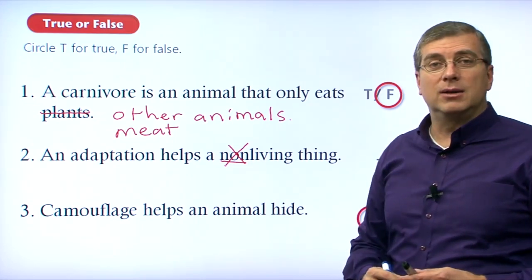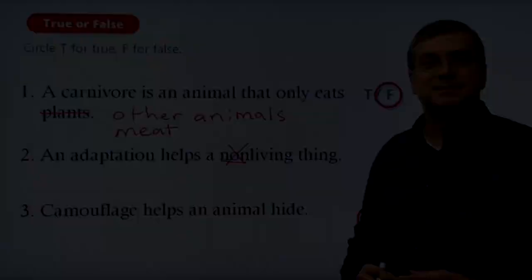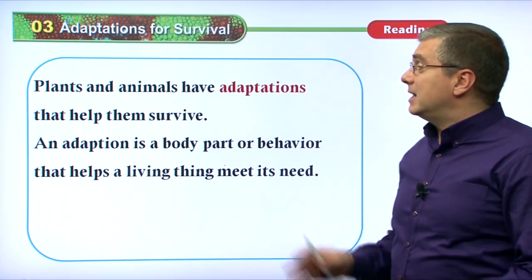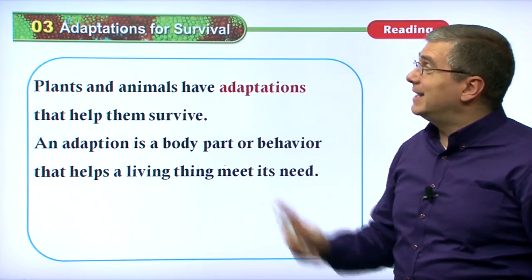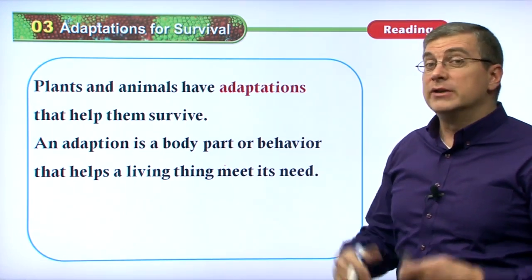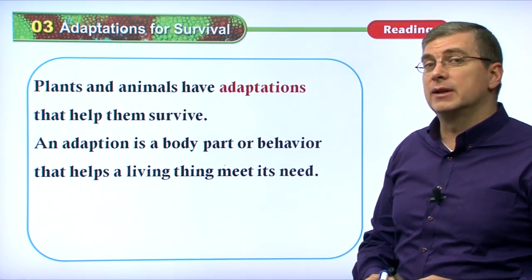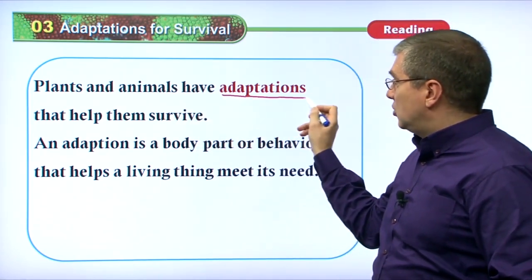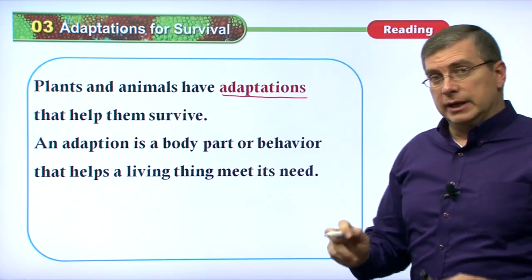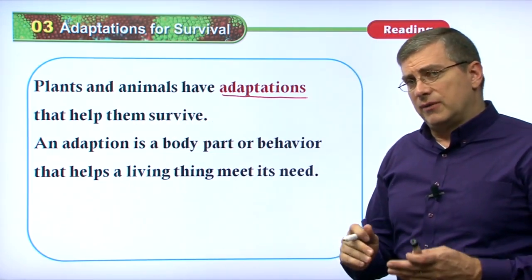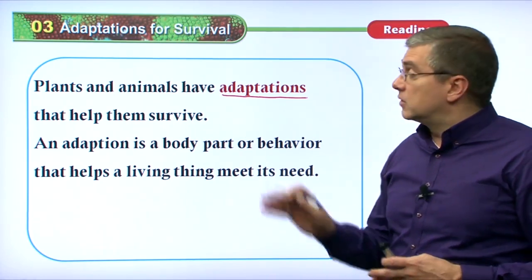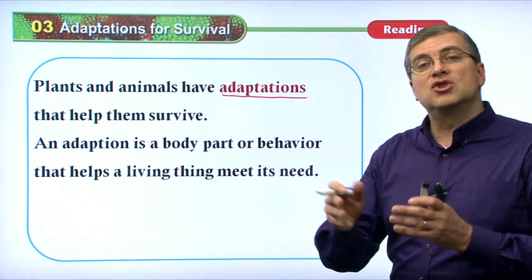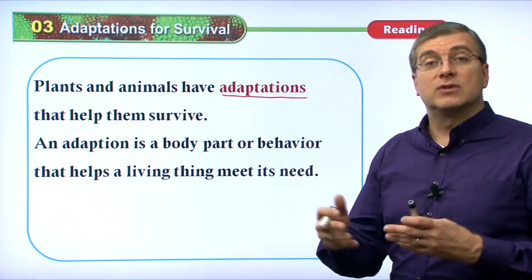Let's take a break and move on to the reading section. Welcome back. In this reading section, our subject is adaptations for survival — that's the topic sentence of the reading passage. Plants and animals have adaptations that help them survive. Adaptations help them survive and meet their needs. This paragraph is going to be about how animals change according to their environment so that they can survive.